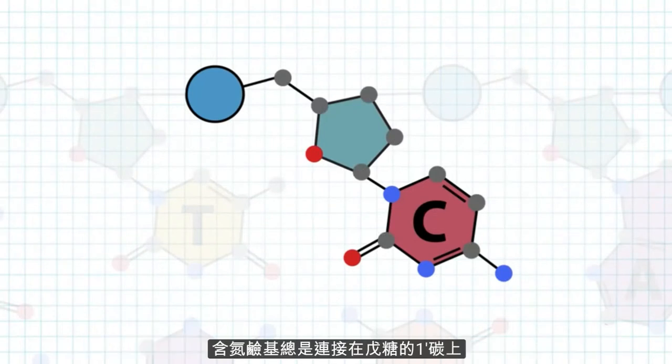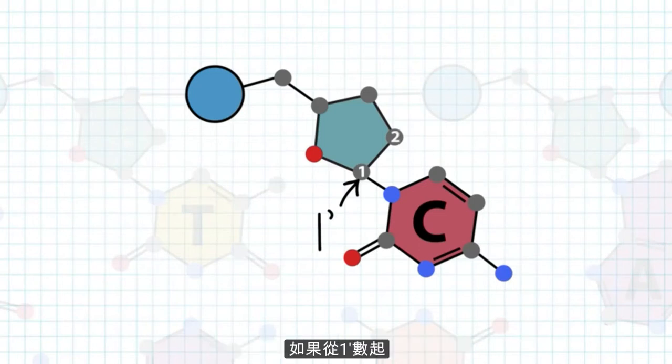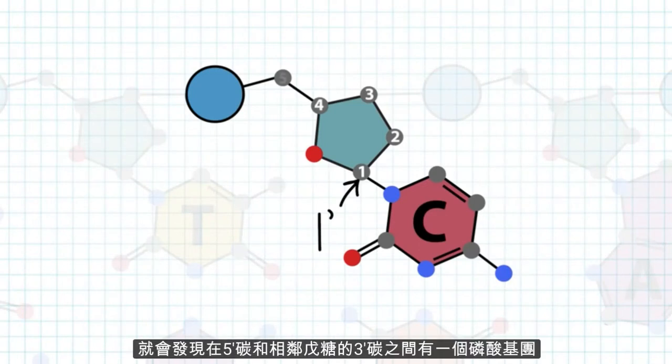The nitrogenous base is always attached at the 1' carbon of the sugar. If we count from there, we can see that there is a phosphate between the 5' carbon of one sugar and the 3' carbon of the neighboring sugar.